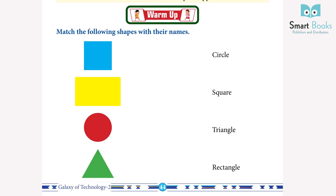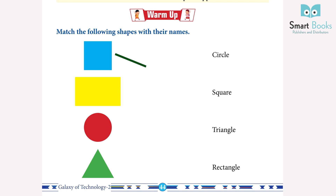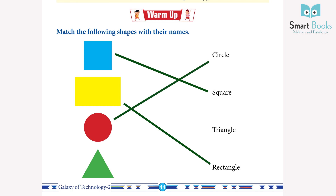Warm up! Match the following shapes with their names. Answer: Match Square with Square, Rectangle with Rectangle, Circle with Circle, Triangle with Triangle.